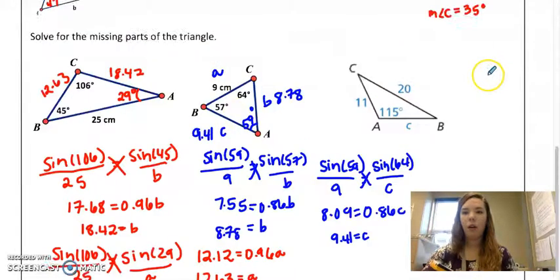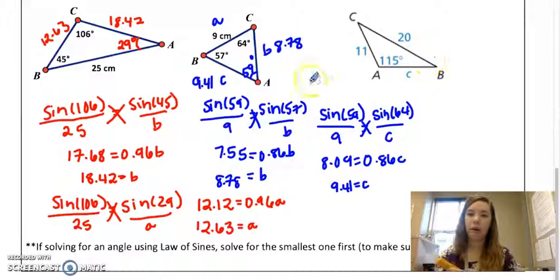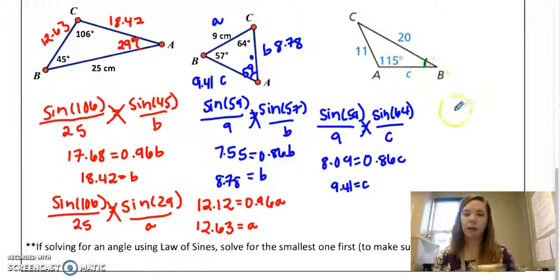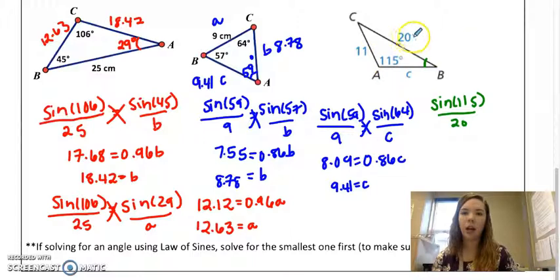All right, last one. This time I have these two for A, and since I know that this is my side length of b, I'm going to first try to find my angle measurement of B. I'm going to find B first, so I know that sine of 115 goes over 20 because that's a and a, and then sine of b will go over 11.